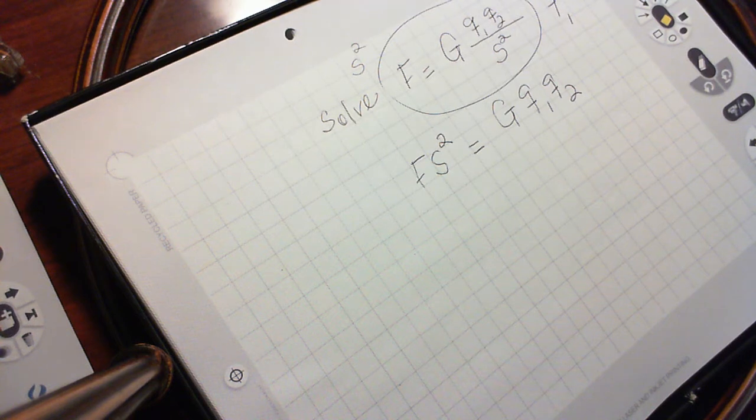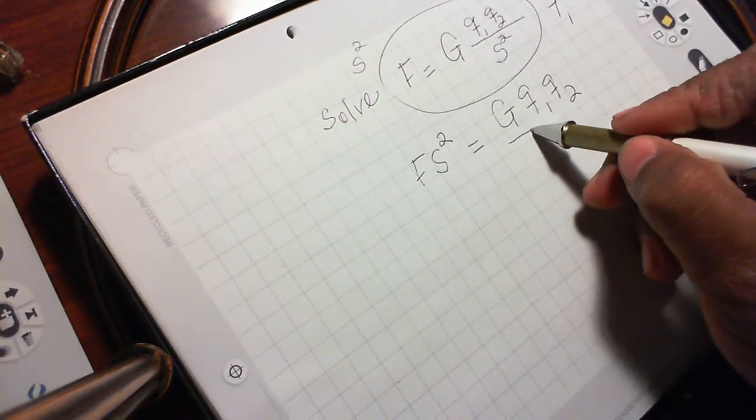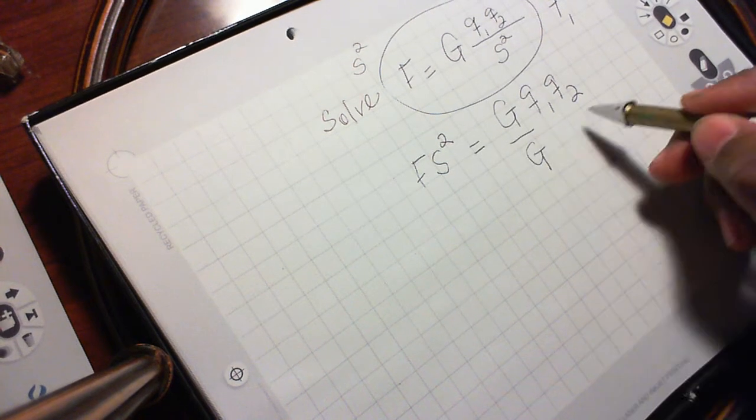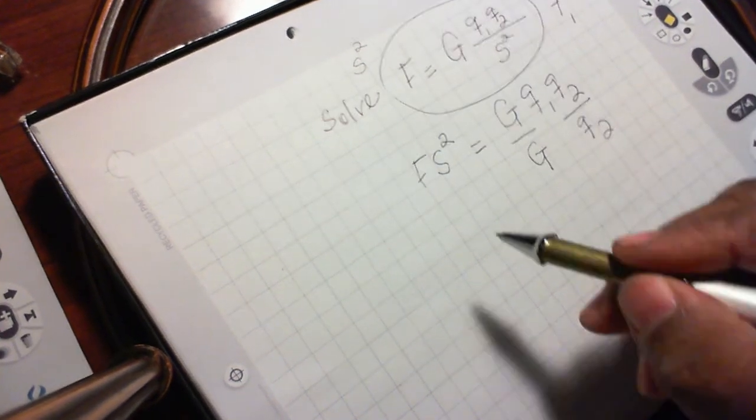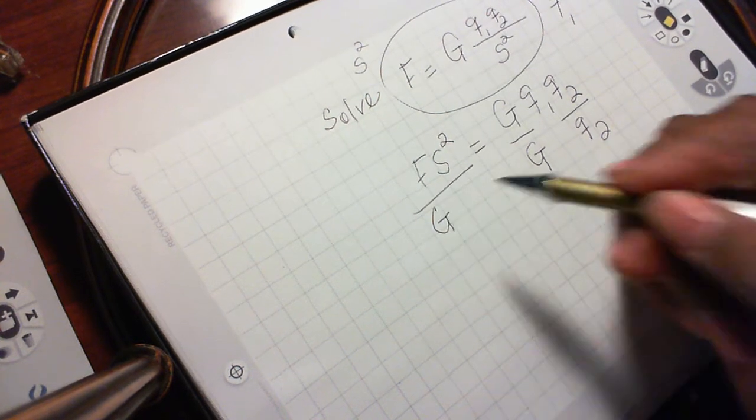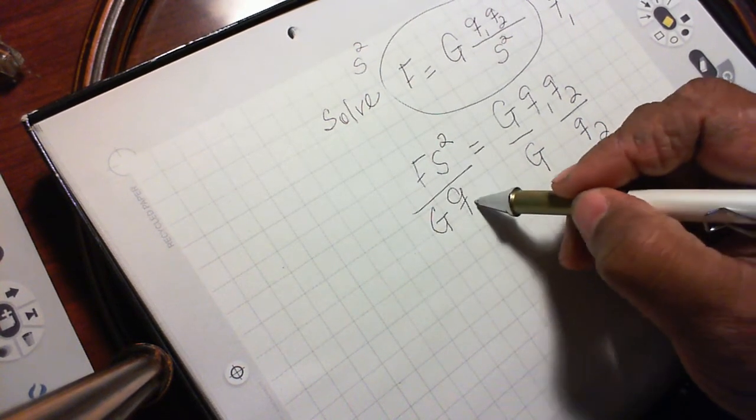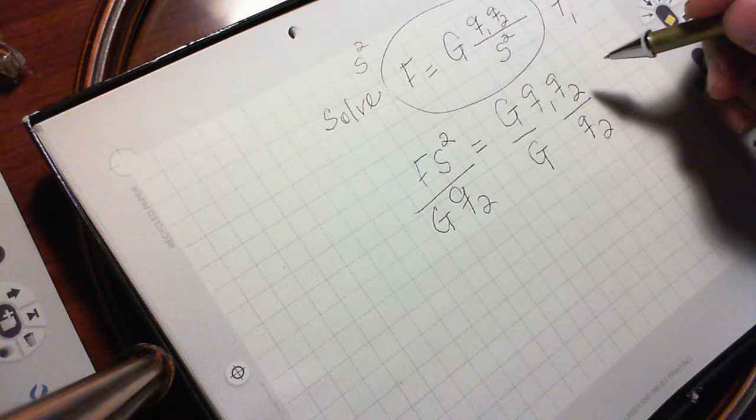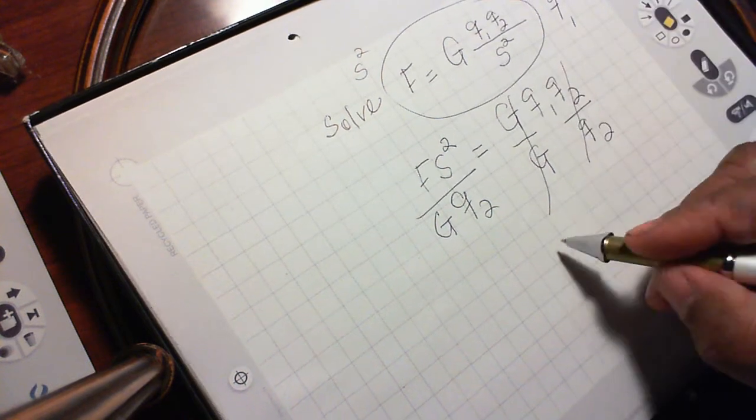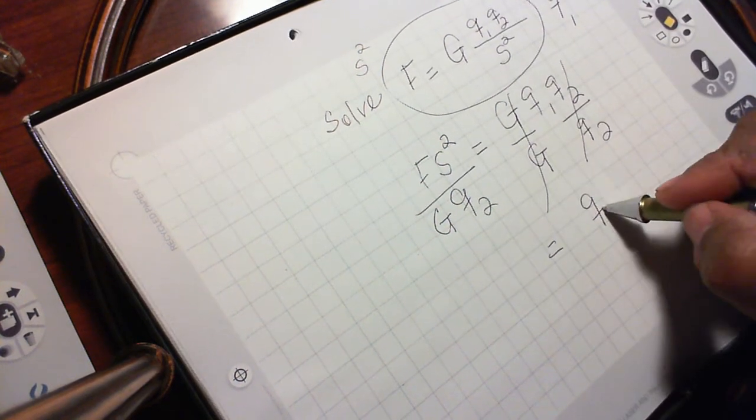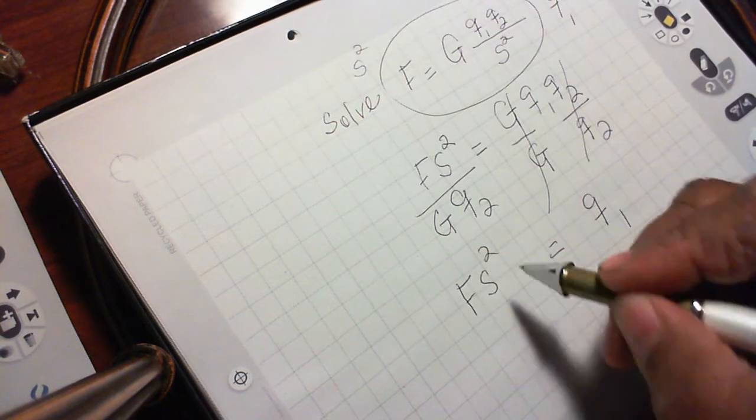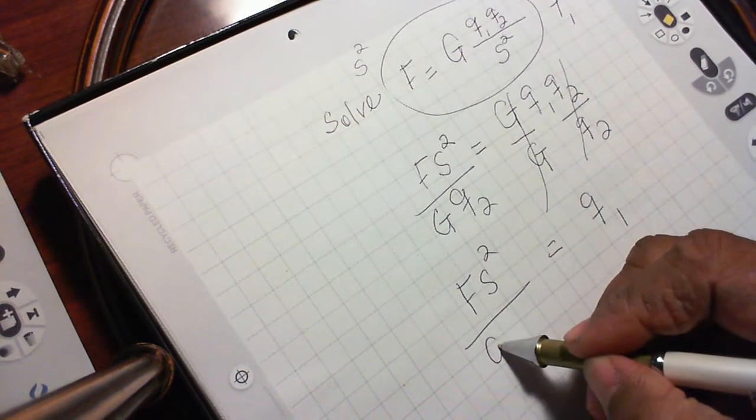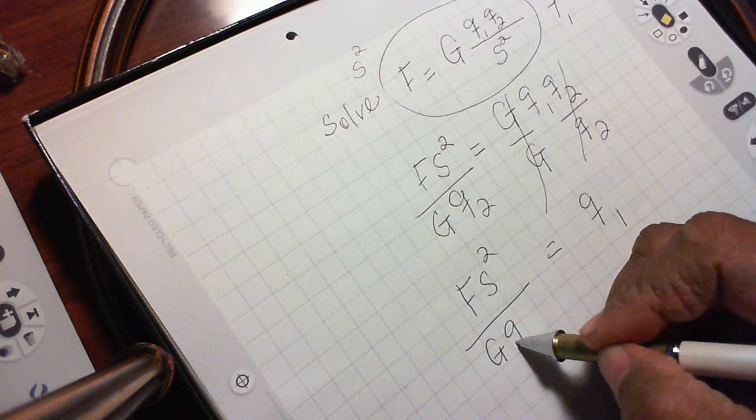So now, the question is, what is q1? So I divide through by G and I divide through by q2 to get q1. I do the same thing on both sides. So this cancels. So I have q1 is equal to F s squared divided by G, capital G, q2.